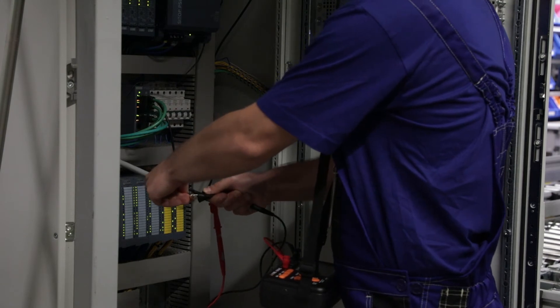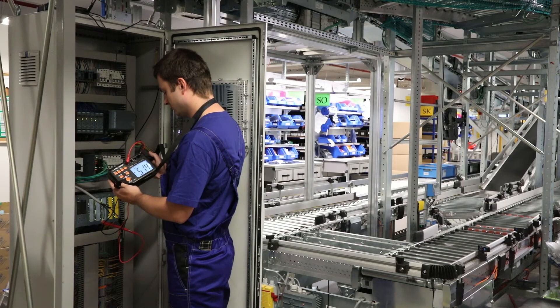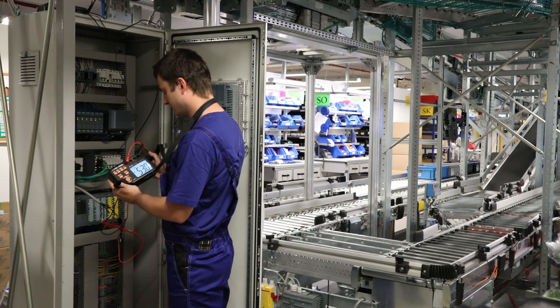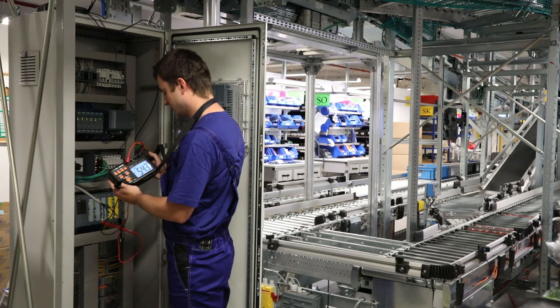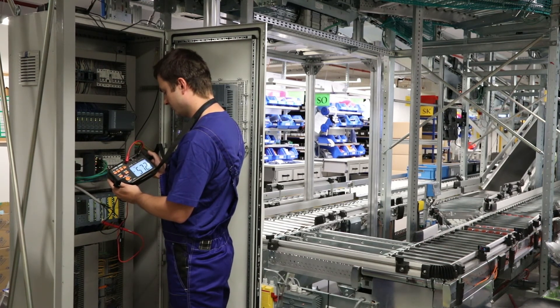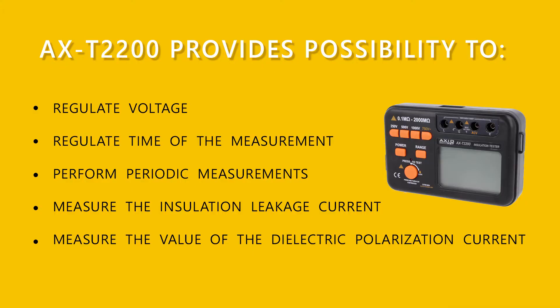The insulation ohmmeter helps to ensure work safety for users of electrical devices. It works even in places where insulation resistance measurements have not been performed yet and is a great supplement for equipment necessary to perform periodic inspections of devices, wires, and electric elements.